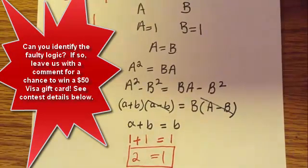There's obviously a glitch in this problem, because there's no way that 2 is equal to 1. And if you figured out the glitch, that's perfect. Make sure to leave it in the comments section.